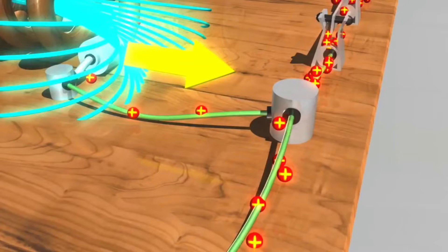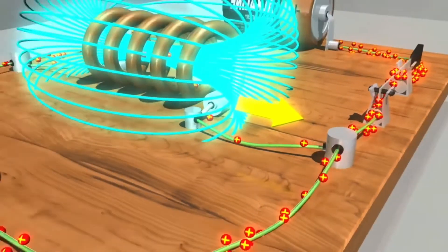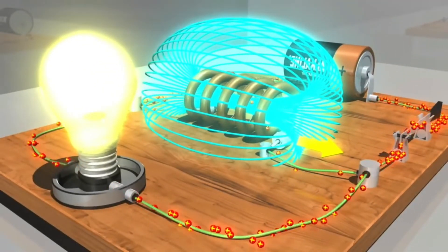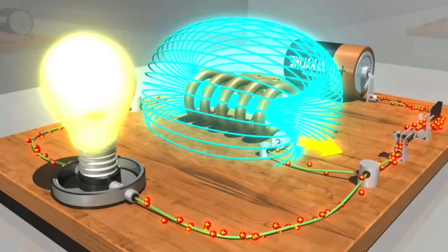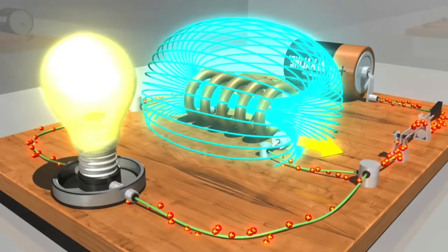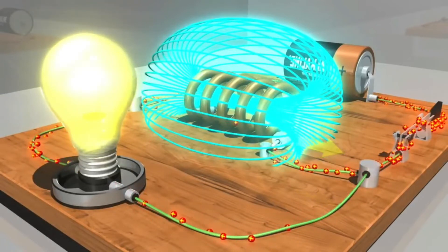The result, as you can see, is that the back EMF effectively diverts the current away from the inductor and toward the light bulb. This causes the bulb to light up, but only briefly.